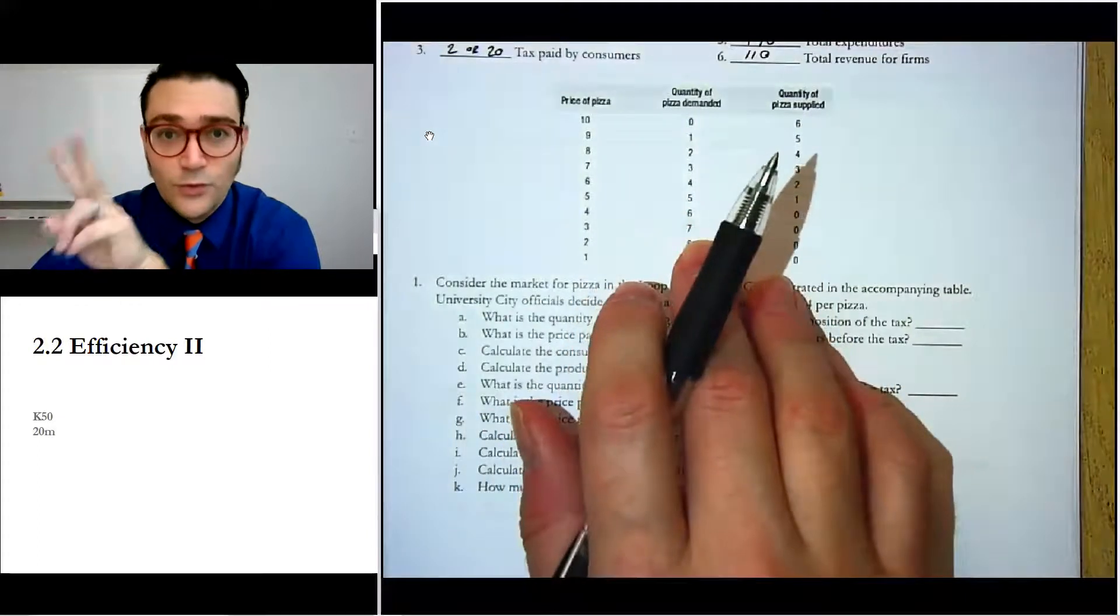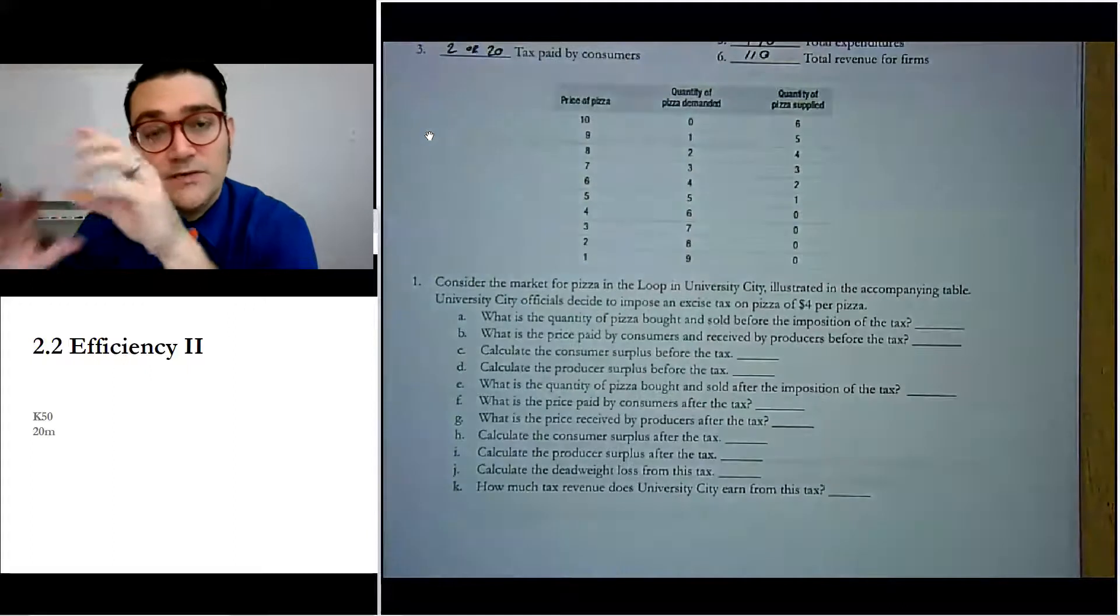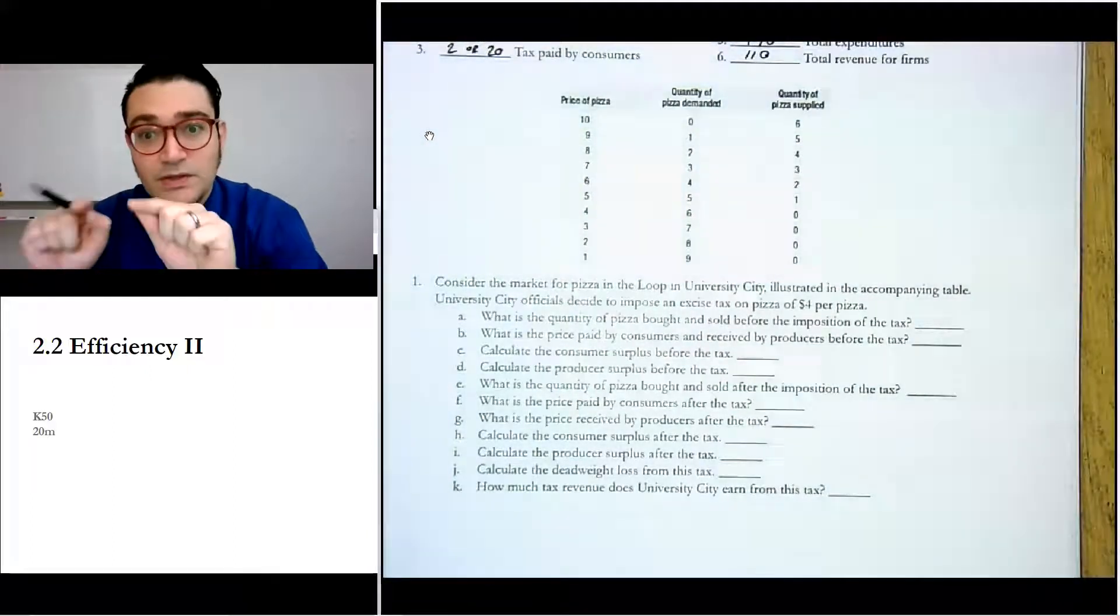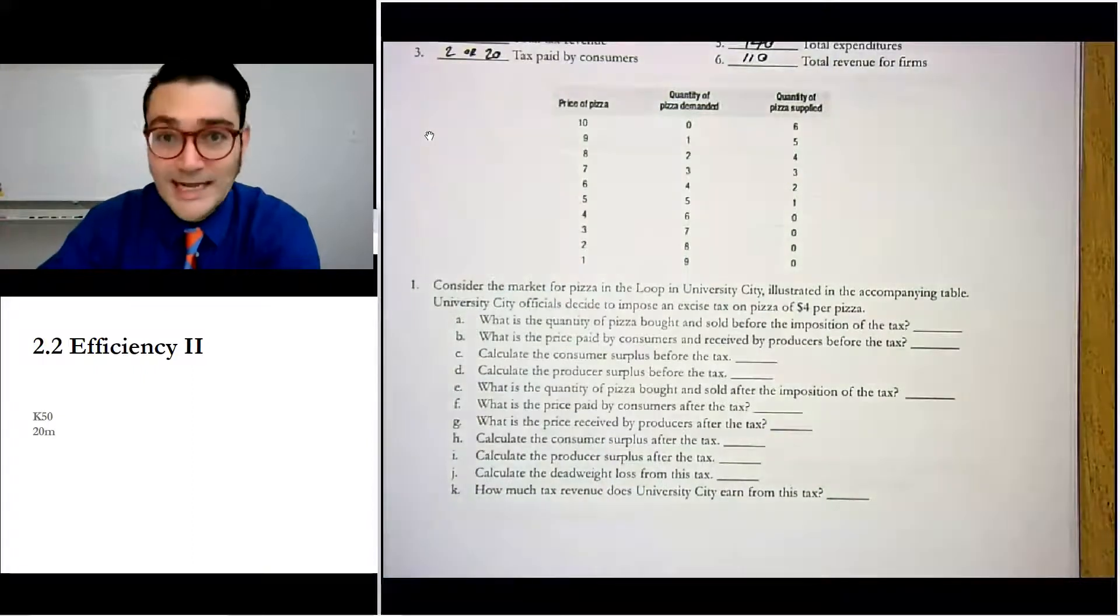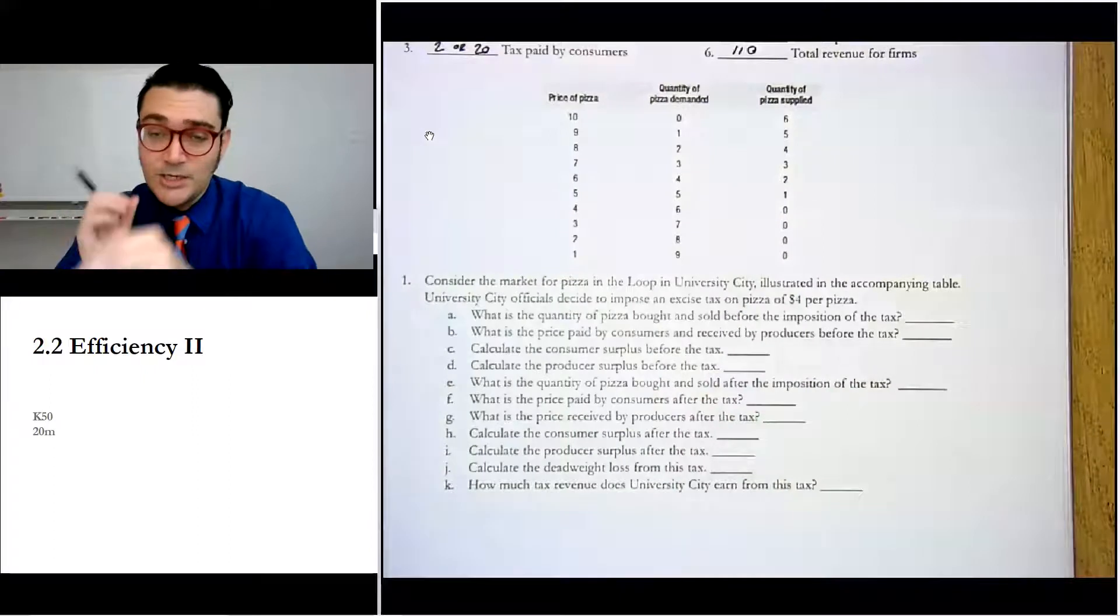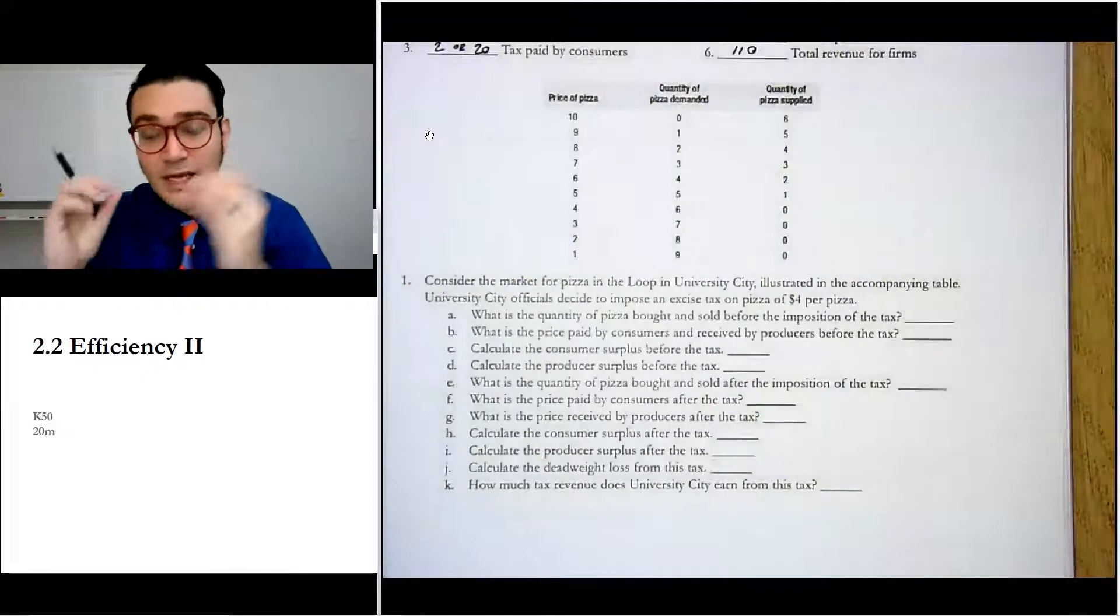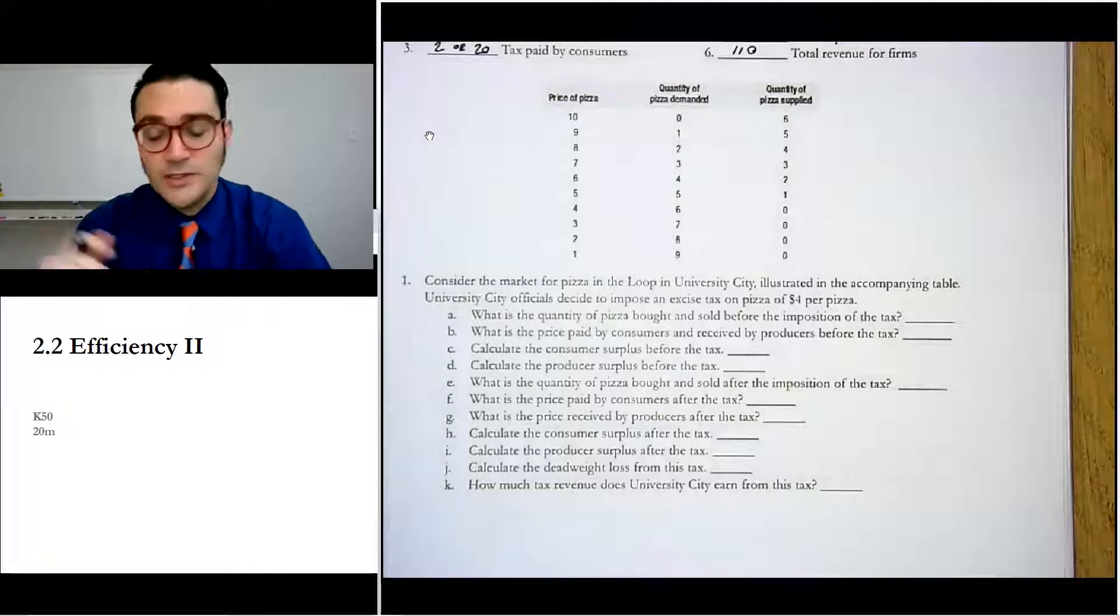You can solve it in one of two ways. You can solve it by just looking at the table, or you can solve it by drawing a graph using the numbers. Me personally, I'm at the point where I can just do it using this table. So I'm going to do that first, and then at the end I'll go back and construct the graph and walk you through it that way. Hopefully one of those two methods works.